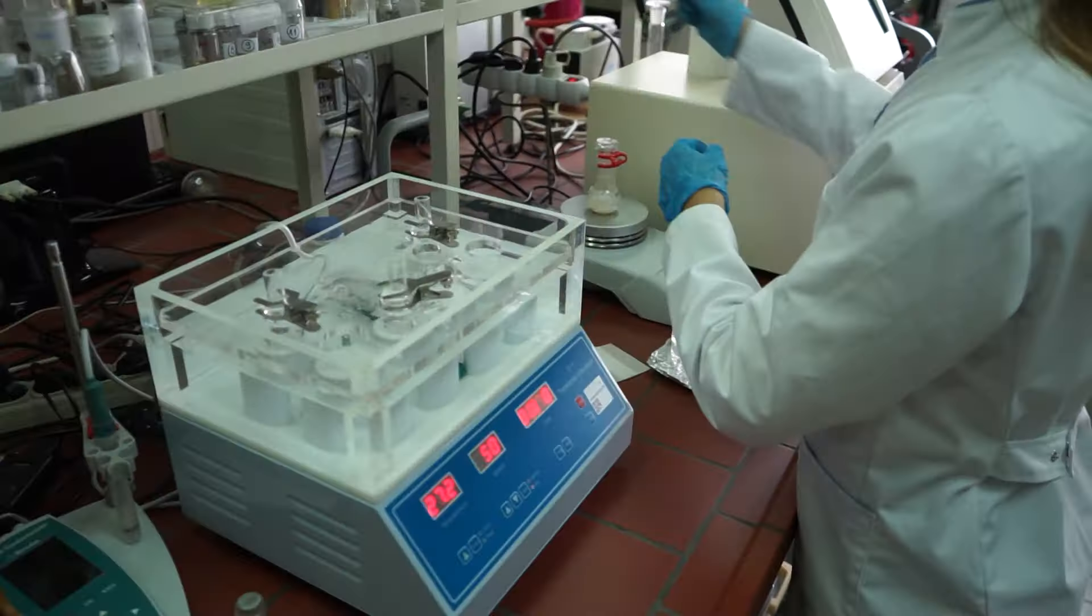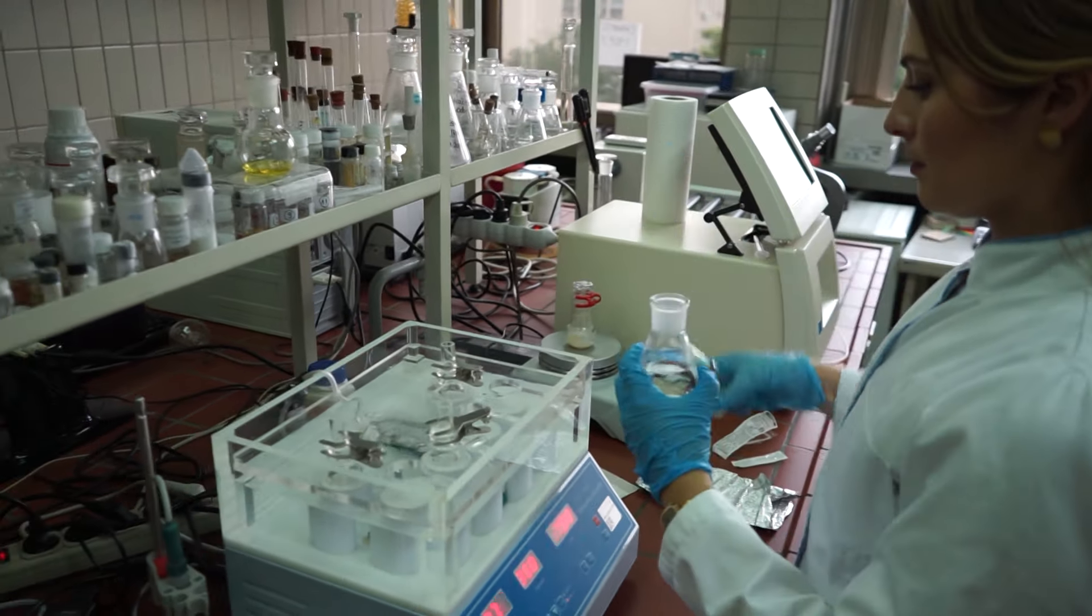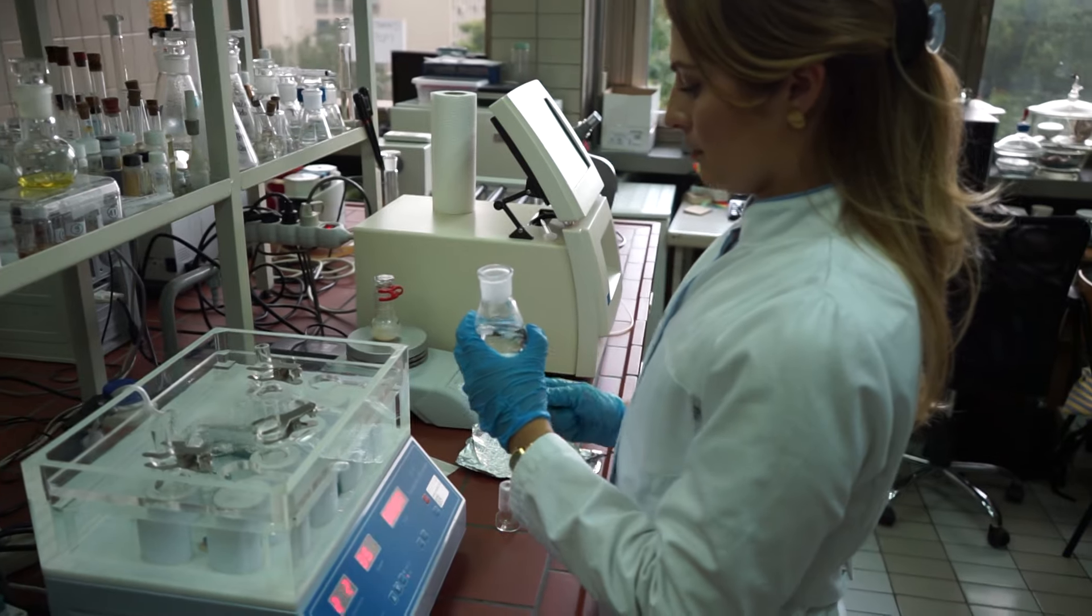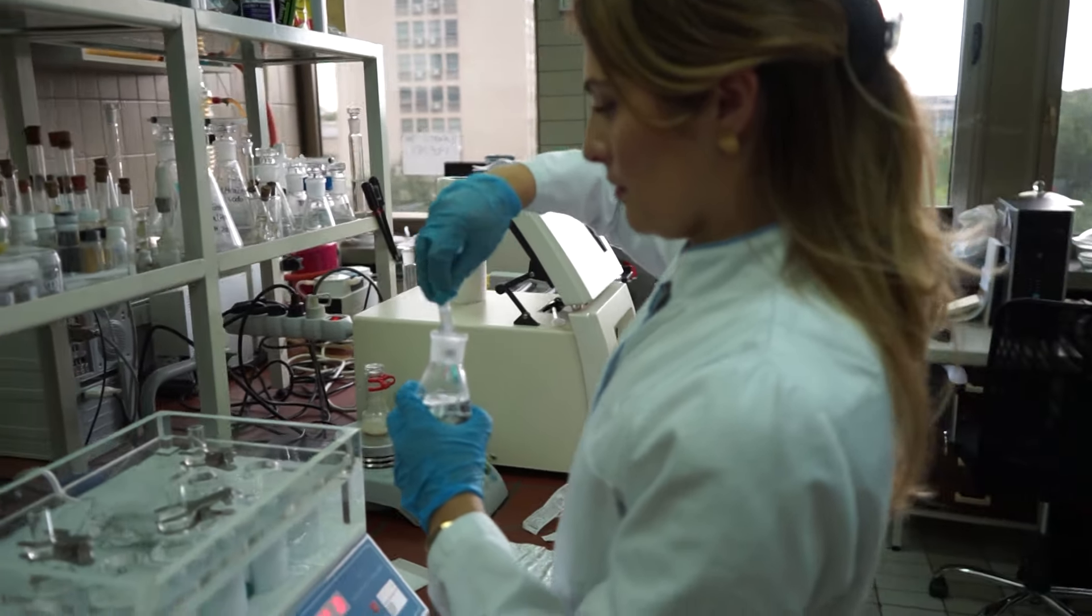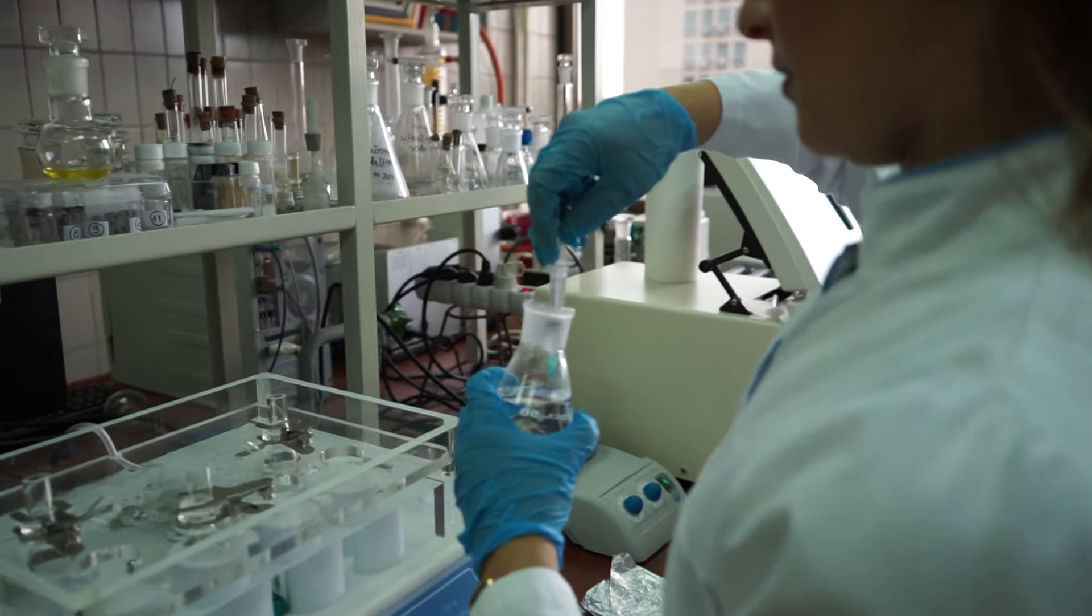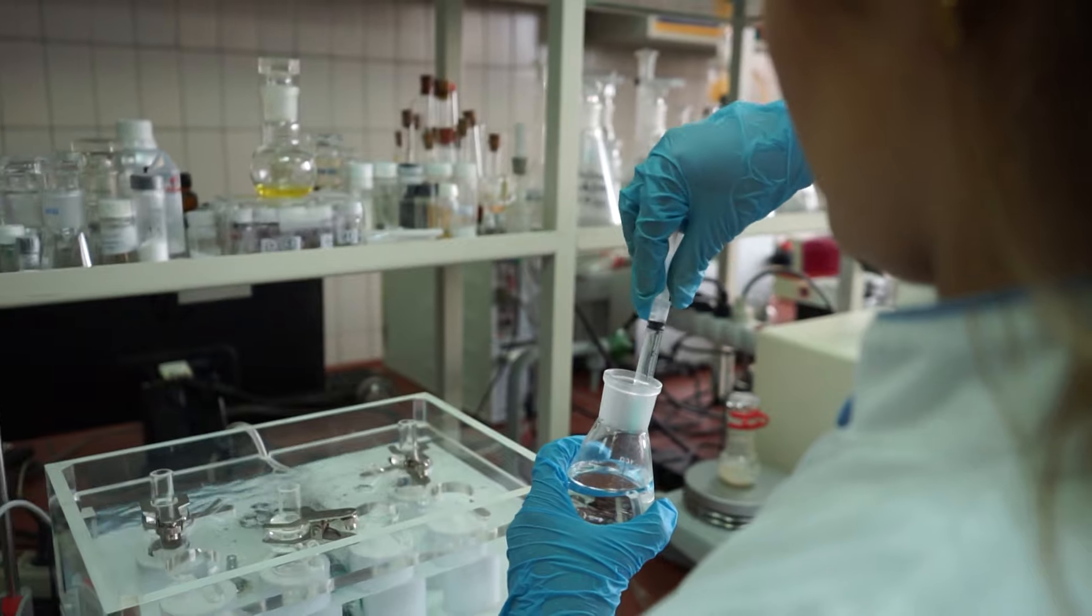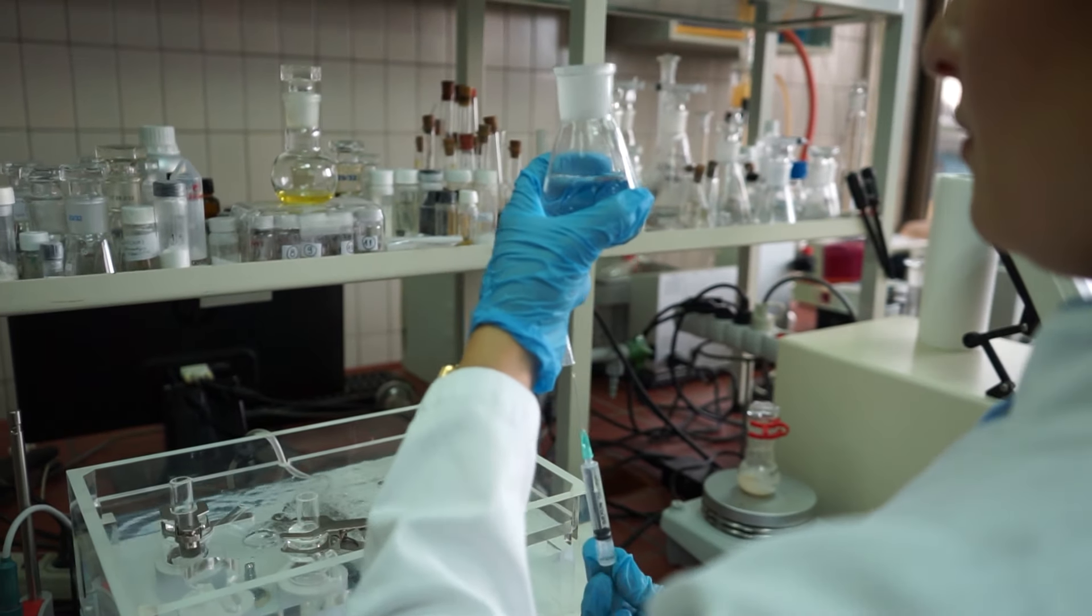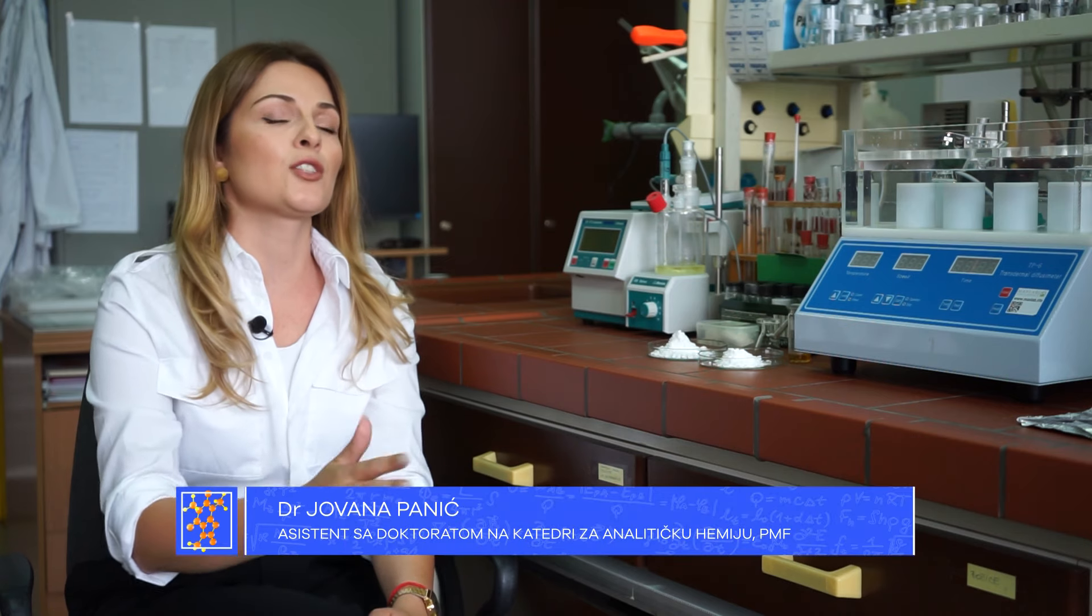Koja je razlika između običnih soli i naših ionskih tečnosti? Obično je to kuhinjska so, i ona se sastoji od simetričnih jona - imamo dva jona, katjon i anjon, i oni su simetrični, otprilike istog oblika. Oni mogu blisko da priđu jedno drugom i da ostvare jake interakcije, i oni ostaju čvrsti na sobnoj temperaturi. Oni se tope na 500, 600, 700 stepeni jer imaju jake interakcije.